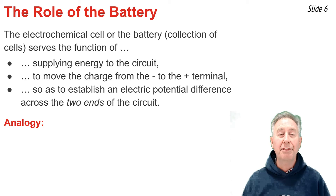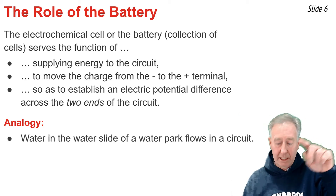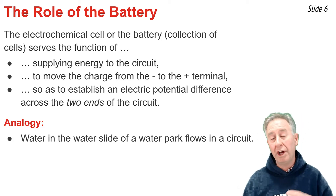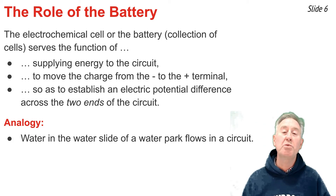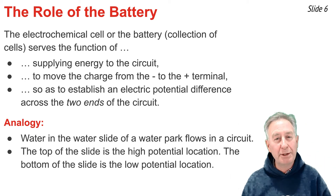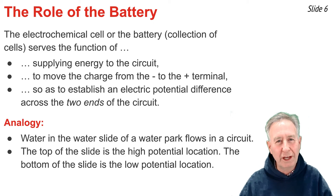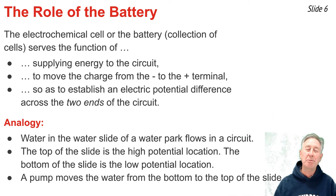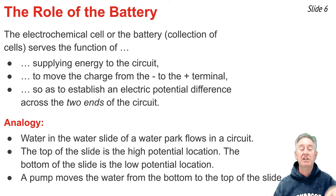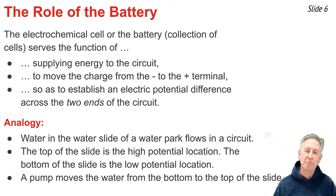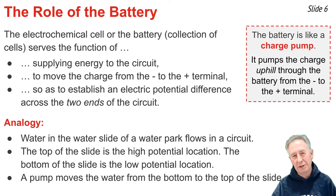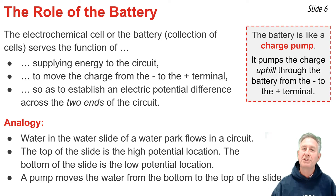To understand this more fully, let's use a water park analogy. At the water park, water flows from the top of the slide down to the bottom naturally, but the water would stay at the bottom unless there was some way to move it back up. The top is the high-potential location and the bottom is the low-potential location. We need a water pump to move the water from the low-potential location back up to the high-potential location to establish this difference in potential across the two ends of the slide. In an analogous manner, that's exactly what the cell does — it uses its energy to pump charge from the low-potential terminal up to the high-potential terminal so that charge can flow like water from the top of the slide to the bottom.